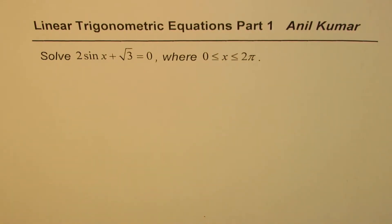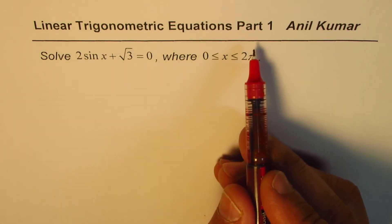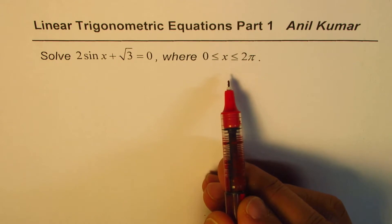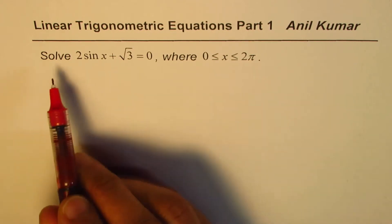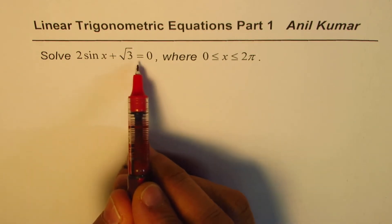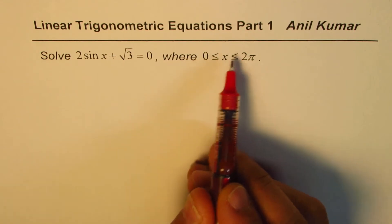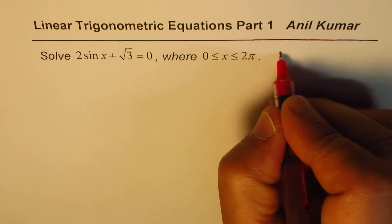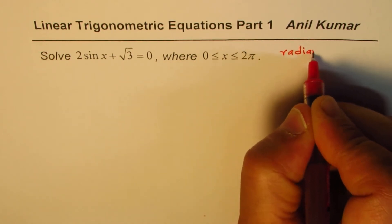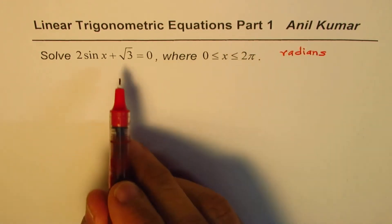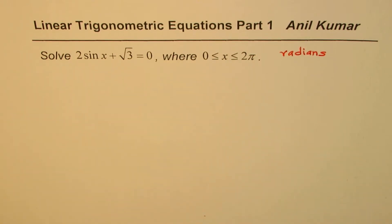I am Manil Kumar. This is one of my first videos on finding solutions for linear trigonometric equations. We are calling it part 1 since in this series I will consider very simple examples to get the concepts going. The equation is: solve 2 sin x plus square root 3 equals 0, where x is greater than or equal to 0 and less than or equal to 2 pi. So we are working in radians. To answer this question you should change your calculator settings to radians.